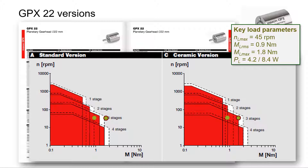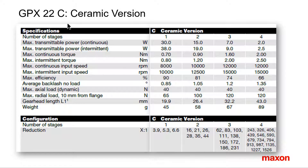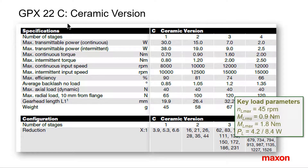So let us look more closely at the specification of the ceramic version. The torque requirements can be met by a three or four stage gearhead. The transmitted power on the four stage gearhead, however, is too small. The lower efficiency compared to three stages gives more heating and therefore the transmitted power rating is reduced. Hence, we are left with three stages. Essentially, we selected gearhead type and number of stages according to the torque and power requirements of our application.